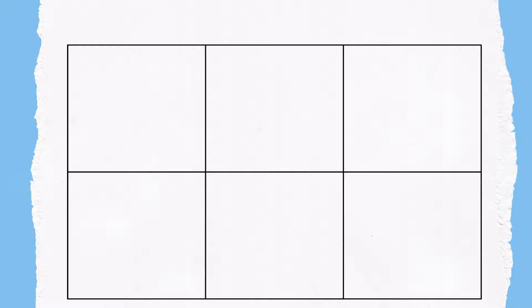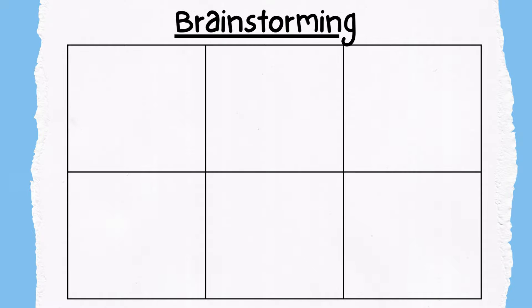To begin brainstorming, take out a piece of paper and divide it into six boxes. Then think about memorable moments from your life that would make a good story. In each box, write a little story title and draw a little doodle in the box if you have time.